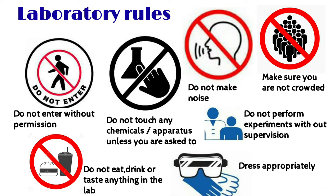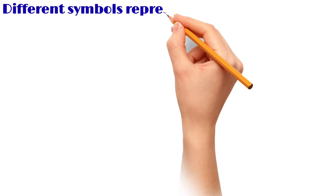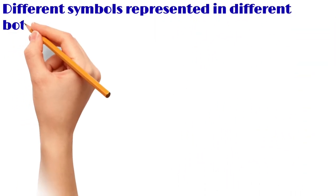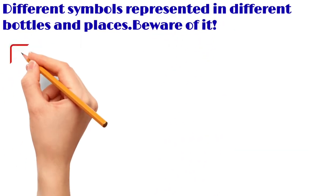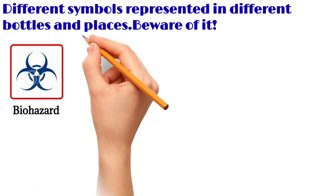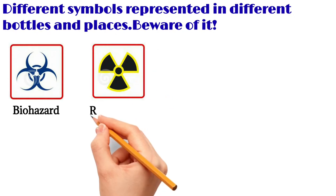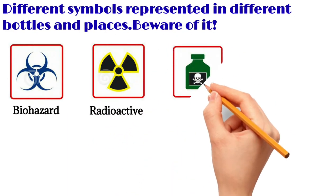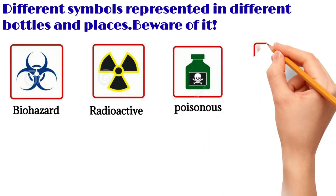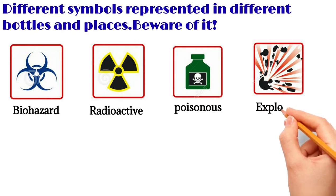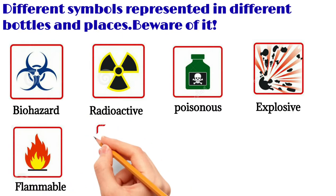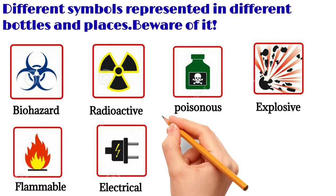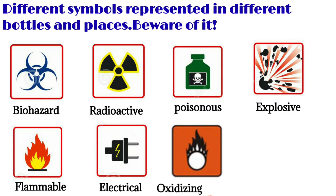Next we move on to the different symbols represented on different bottles and places — beware of them. The first symbol represents biohazard. This symbol represents radioactive. This symbol represents poisonous. This symbol represents explosive. This symbol represents flammable. This symbol represents electrical hazard. This symbol represents oxidizing material.